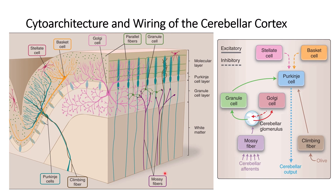Mossy fibers do not have fibers from the olive — they come from other parts. Cerebellar afferent fibers coming from the spinal cord go to the glomerulus. The granular cells are normally excited there, then they go to the Golgi cells, but the Golgi cells inhibit the granular cells. So normally the granular cells are inhibited by the Golgi cells, and something else must inhibit the Golgi cells to make the granular cells active.